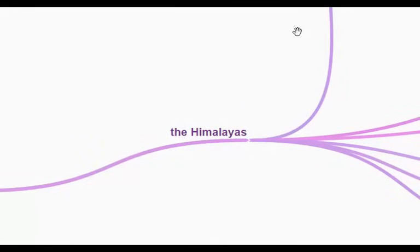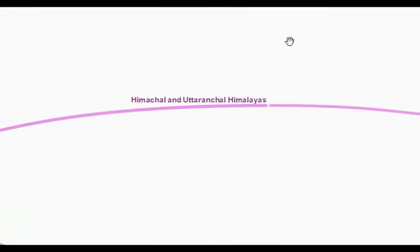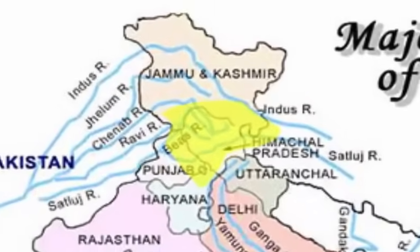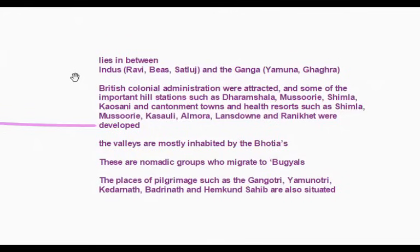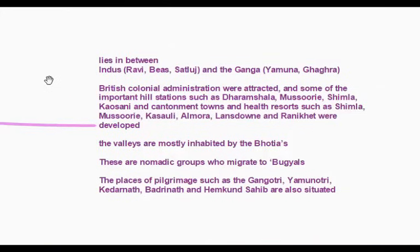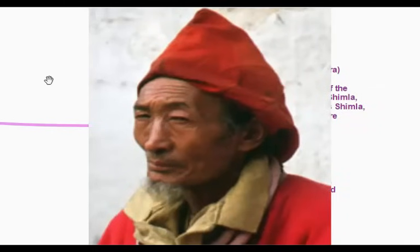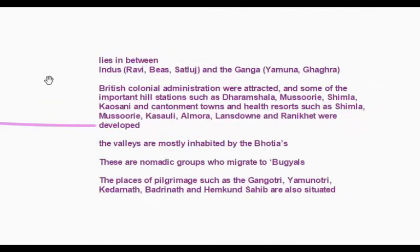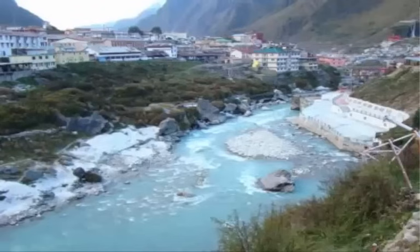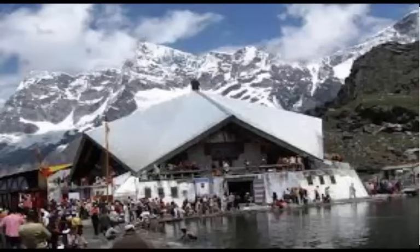The Himachal and Uttaranchal Himalayas lie between the Indus and the Ganga tributaries. The British colonial administration was attracted here and developed important hill stations such as Dharamshala, Mussoorie, Shimla, and Kasauni, as well as cantonment towns. The valleys are mostly inhabited by the Bhutia tribes, a nomadic group who migrate to Bugyals. Places of pilgrimage such as Gangotri, Yamunotri, Kedarnath, Badrinath, and Hemkund Sahib are also situated here.